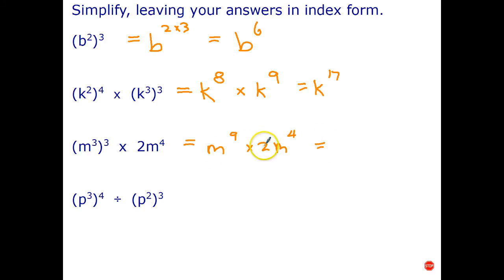Now, once again, we have one coefficient there. There's really a coefficient of 1 there. 1 times 2 is 2. So, we write the coefficient first. And we have m to the 9th times m to the 4th. Well, to multiply powers with the same base, we add the indices. And the final answer is 2m to the power of 13.